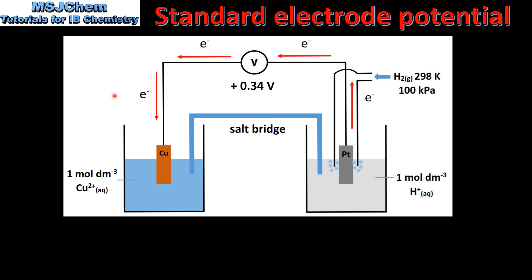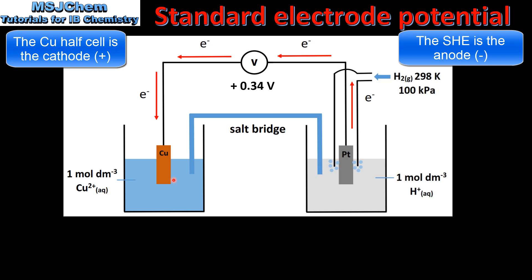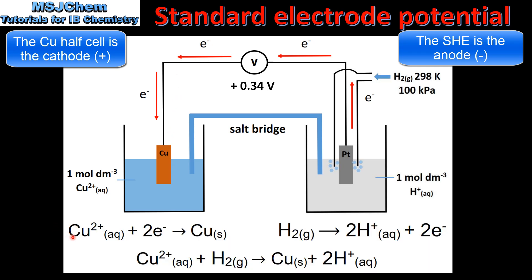Let's look at one more example. On the left we have a copper half cell which is composed of a copper electrode in a 1 mole per decimeter cubed solution of copper 2+ ions. The copper half cell is connected by a wire and a salt bridge to the standard hydrogen electrode on the right. We also have a voltmeter in the circuit which measures the electrode potential of the copper half cell. Because copper is lower than hydrogen in the activity series, the electrons flow from the standard hydrogen electrode to the copper half cell. In the copper half cell we have the reduction of copper ions to form copper metal. In the standard hydrogen electrode we have the oxidation of hydrogen gas to form hydrogen ions.